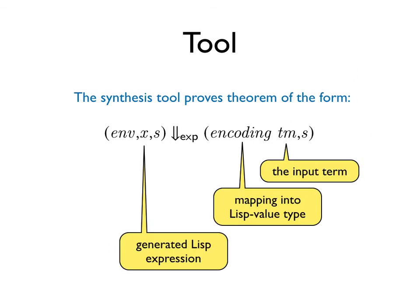This proof producing tool proves theorems of the following form. Given an input term, it picks an appropriate function for mapping this term into LISP values and generates a LISP expression that satisfies this term.